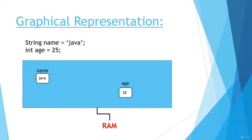To recap: first you have to type the name of the data type, then the name of the variable, then the value you want to store. In the first line, we store the string value 'java' in the name variable — you can see in the RAM a white box with the name 'name' holding the value 'java'. In the second line, we declared a variable of integer data type and assigned it the value 25 — in the RAM there is a white box named 'age' holding the integer value 25.